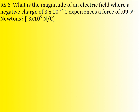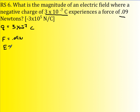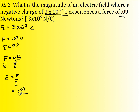What's the magnitude of an electric field where a negative charge of 3 times 10 to the negative 7 Coulombs experiences a force of 0.09 Newtons? Q is negative 3 times 10 to the negative 7 Coulombs and F is 0.09 Newtons. The relationship is force equals Q times E, so solving for E: E equals F divided by Q. That's 0.09 Newtons divided by negative 3 times 10 to the negative 7, giving negative 3 times 10 to the 5th Newtons per Coulomb.